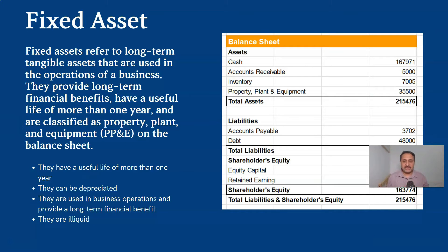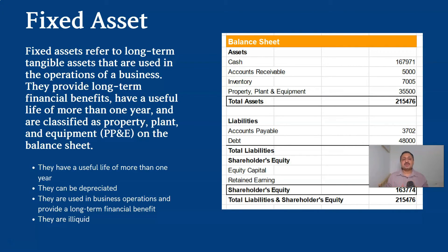In a balance sheet, fixed assets are mentioned in the Property, Plant and Equipment section. Fixed assets are long-term, non-liquid assets that are usually used in the operations of a business. They are one of the most important factors for investors, who analyze how many fixed assets a business owns. With the passage of time, the book value of these assets depreciates, and we also record this depreciation in D365 for Finance and Operations.